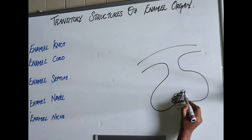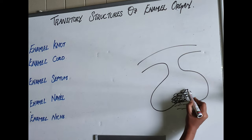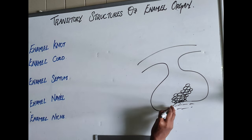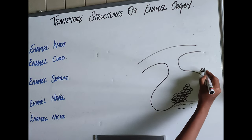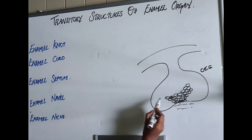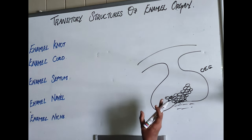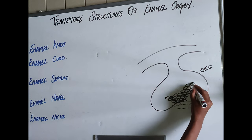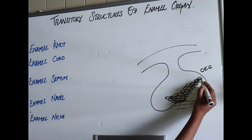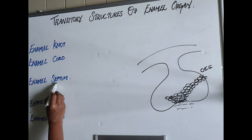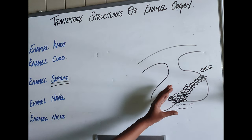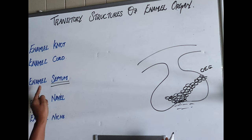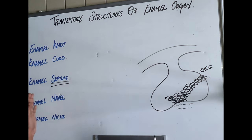Next is the enamel cord. When these clusters of cells extend in a vertical manner towards the outer enamel epithelium, it is called the enamel cord. If these densely packed cells reach the outer enamel epithelium, then it is called the enamel septum.